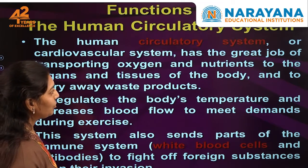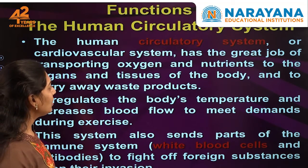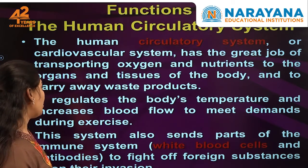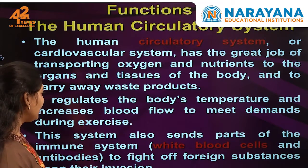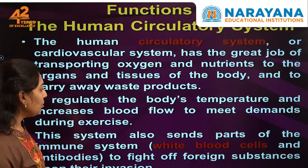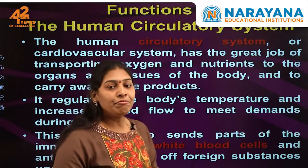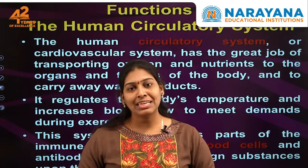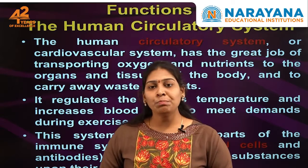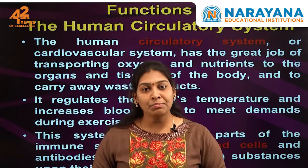The human circulatory system, or cardiovascular system, has the great job of transporting oxygen and nutrients to the organs and tissues of the body and carrying away waste products. It regulates body temperature and increases blood flow to meet the demands during exercise. This system also sends parts of the immune system — white blood cells and antibodies — to fight against foreign substances and harmful microorganisms, or pathogens.